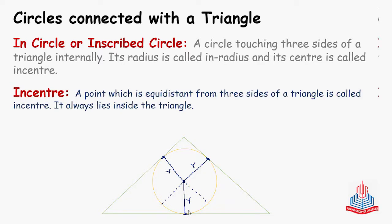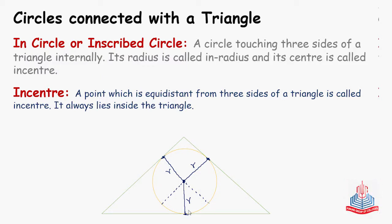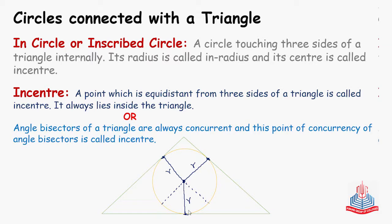The in-center is a point which is equidistant from three sides of a triangle, and it always lies inside the triangle. It will always be inside the triangle because the circle is inside the triangle, so the center will also be located inside the triangle. The in-center can also be defined in another way.